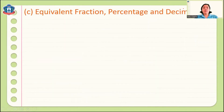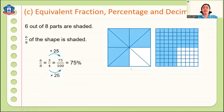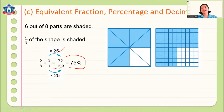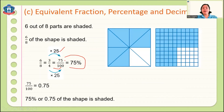Now let's look at equivalent fractions, percentages, and decimals. Six out of 8 parts are shaded, so 6/8 of the shape is shaded. To change to a percentage, we need the denominator to equal 100. First reduce 6/8 to 3/4. Then multiply 3/4 by 25 to get 75/100, which equals 75%. Since 75% is out of 100, as a decimal it is 0.75. Therefore, 6/8, 0.75, and 75% are equivalent — they have the same value.